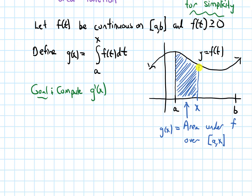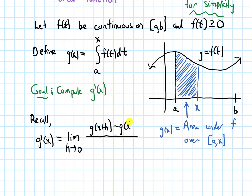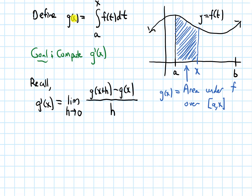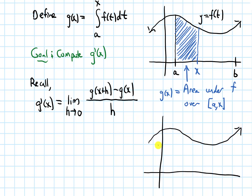Depending on what x is, this area changes — if x gets a little bit bigger, we have a bigger area. So this definite integral depends on the value of x, and that's why it's a function of x. Our goal is to compute the derivative of this area function. I'll use the limit definition of a derivative: the limit as h goes to 0 of g of x plus h minus g of x, all over h. I'm also going to label x and x plus h in the picture.